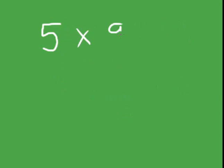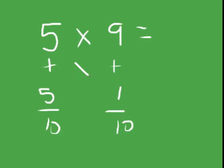5 times 9. 5 plus 5 equals 10. 9 plus 1 equals 10. 5 minus 1 equals 4, and 5 times 1 equals 5. 45.